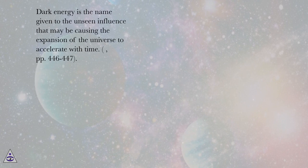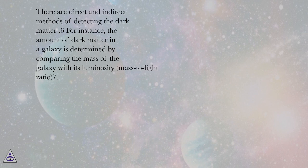There are direct and indirect methods of detecting the dark matter. For instance, the amount of dark matter in a galaxy is determined by comparing the mass of the galaxy with its luminosity, mass-to-light ratio.